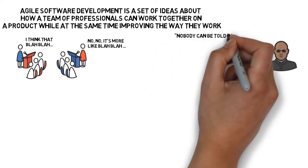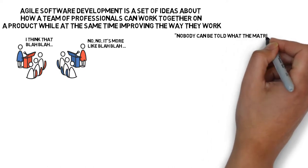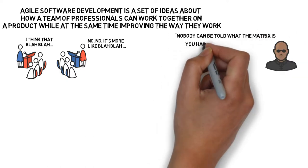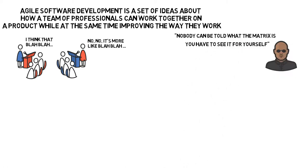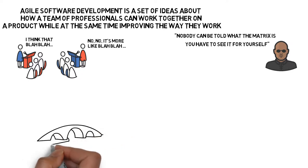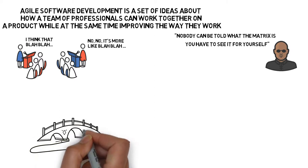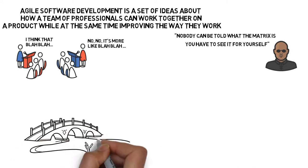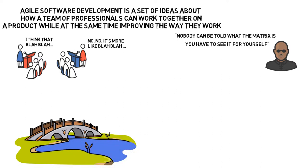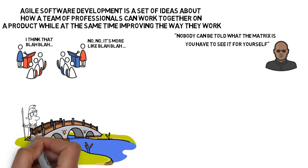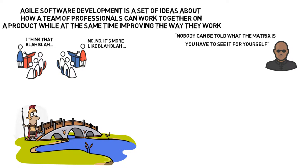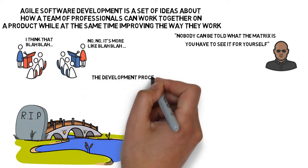Agile raised in prominence in the early 2000s as an alternative approach to work management, fundamentally different from then-popular methods that came to software development from other industries and relied heavily on preparation and documentation. Imagine that you're building a bridge. How do you do it? You can't just build anything and let people use it. If the bridge crumbles, people will die. We have to know that the bridge is safe before even the first person walks on it. What's more, it's not easy to modify a bridge. You can't just build it, test it, decide that it's not good enough, take it down and build it again. It would be way too expensive.